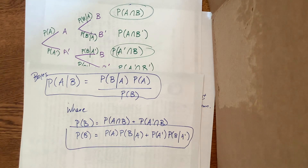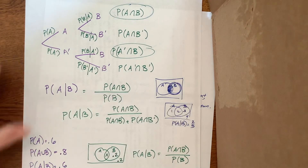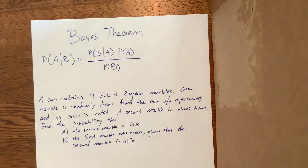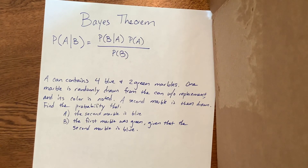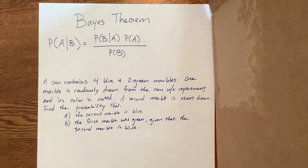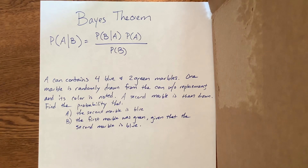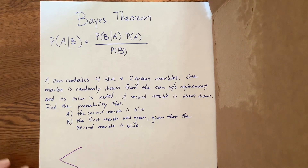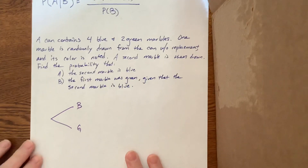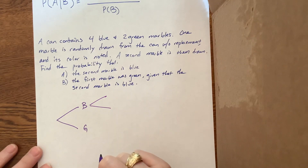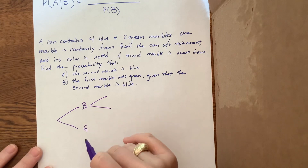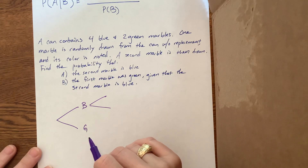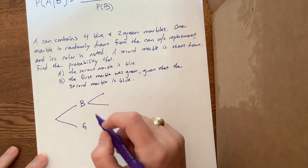Let's look at an actual example from the book. A can contains four blue and two green marbles. One marble is randomly drawn without replacement, its color is noted, and then the second marble is drawn. I'm going to work through this the way that comes naturally to me, then verify against the book's approach.